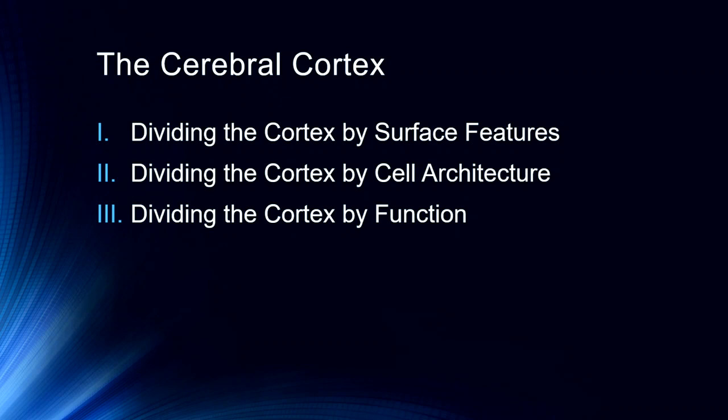We'll be talking about how we divide the cortex up in a variety of ways. One of the problems with the cerebral cortex is trying to figure out how to describe specific areas, and there are a number of different ways to do this. I tend to use surface features, functional features, combinations of surface features and directions. Things like the dorsolateral prefrontal cortex is an important area we'll talk about. I do not tend to divide the cortex up by cell architecture, but it's important that we at least introduce the idea.